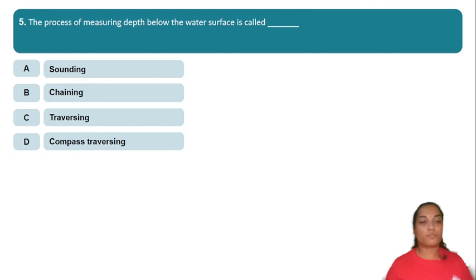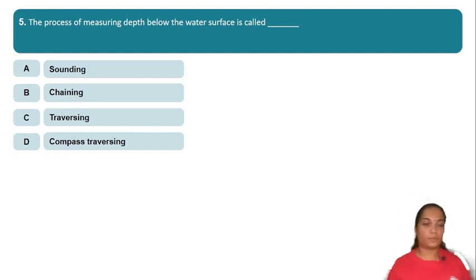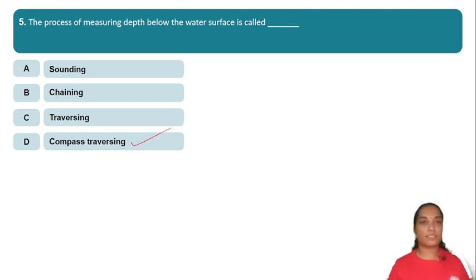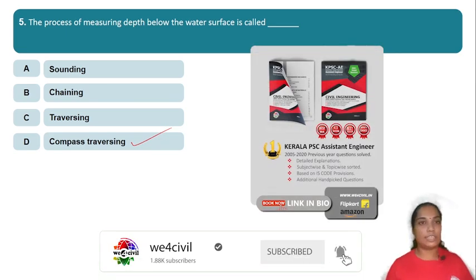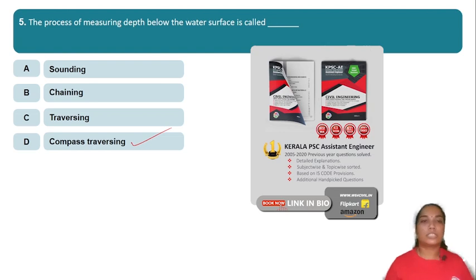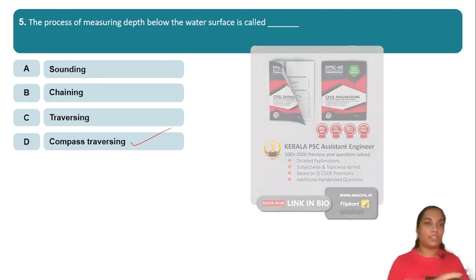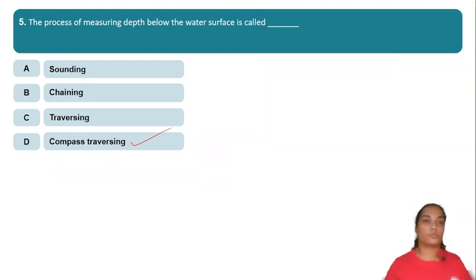The process of measuring depth below the water surface is called sounding. The options include: compose traversing, traversing, chaining and linear measurements, and chaining plain surveying. The answer is sounding — it is the method used to measure depth below water surface.